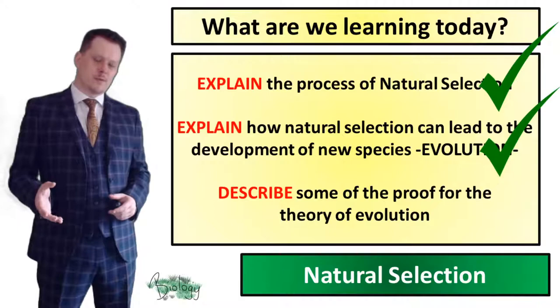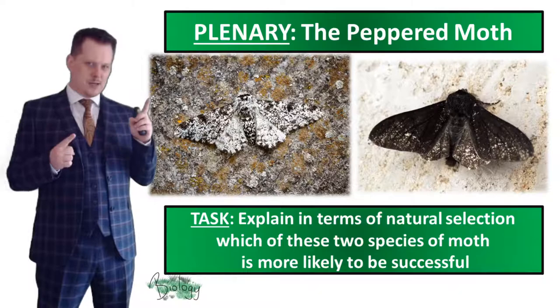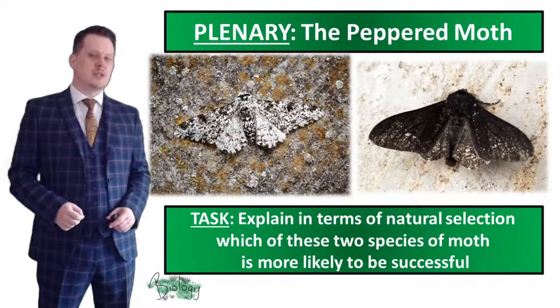So now we can describe some of the proof for the theory of evolution, and we're going to look at this in more detail in later lessons. Before we wrap up, here is our plenary. I'd like you to explain in terms of natural selection which of these two species of moth is more likely to be successful.